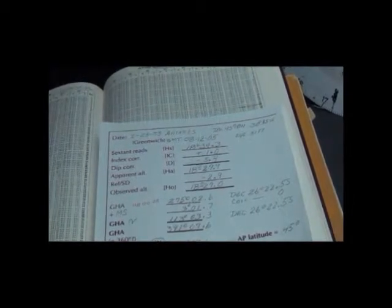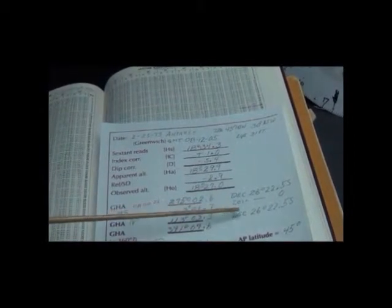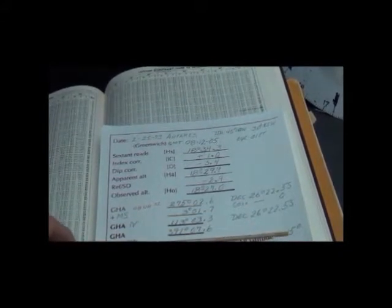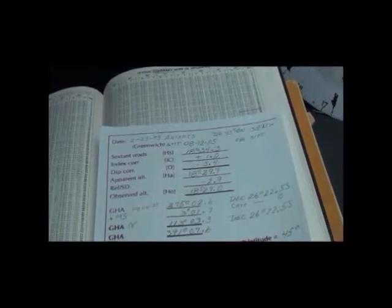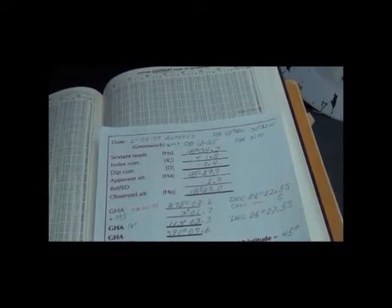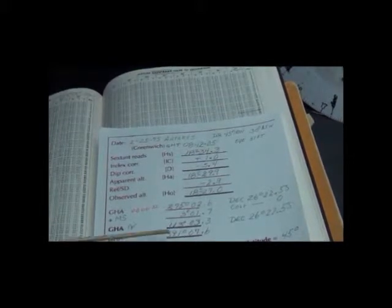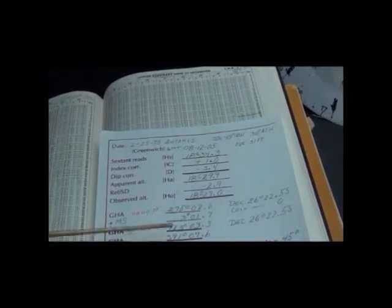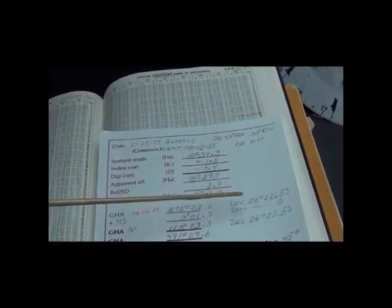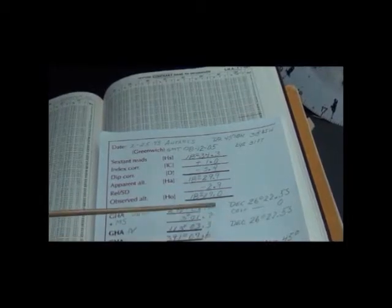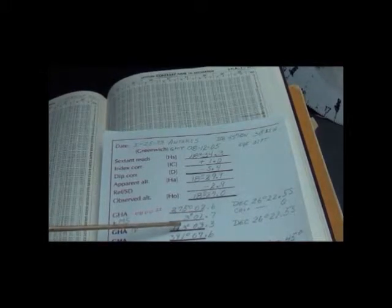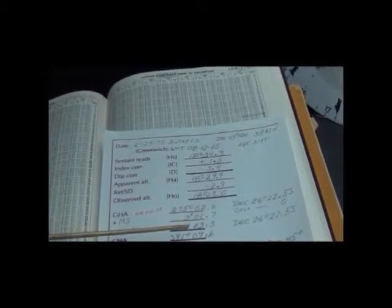We can go into the tables now with this information: one degree local hour angle, declination 26, and latitude 45. Now when we subtracted our 30 degree longitude from the GHA of the star, we combined them. So now we know the declination, the latitude, and the combined GHA angle and our longitude. So let's go into the tables and take a look at them.